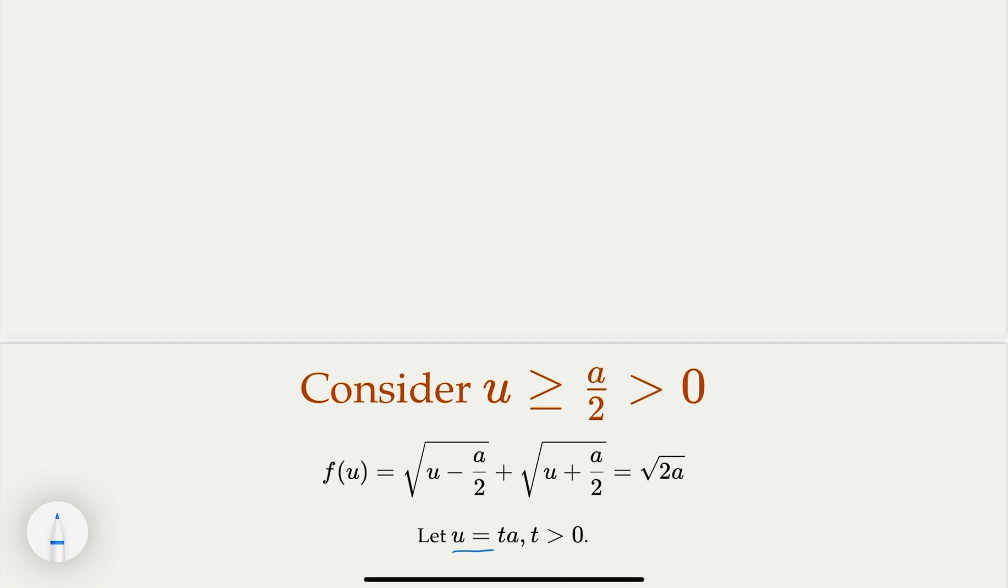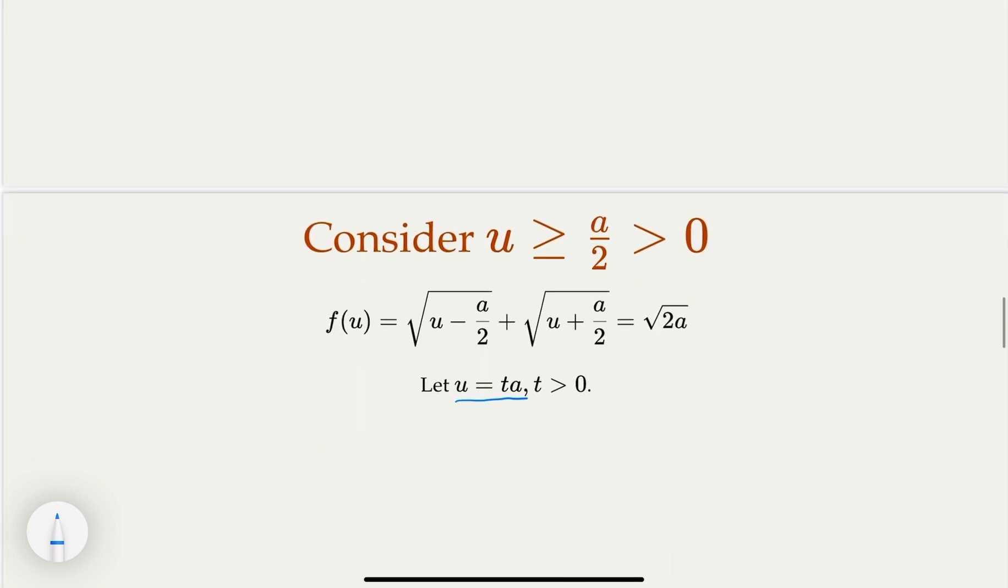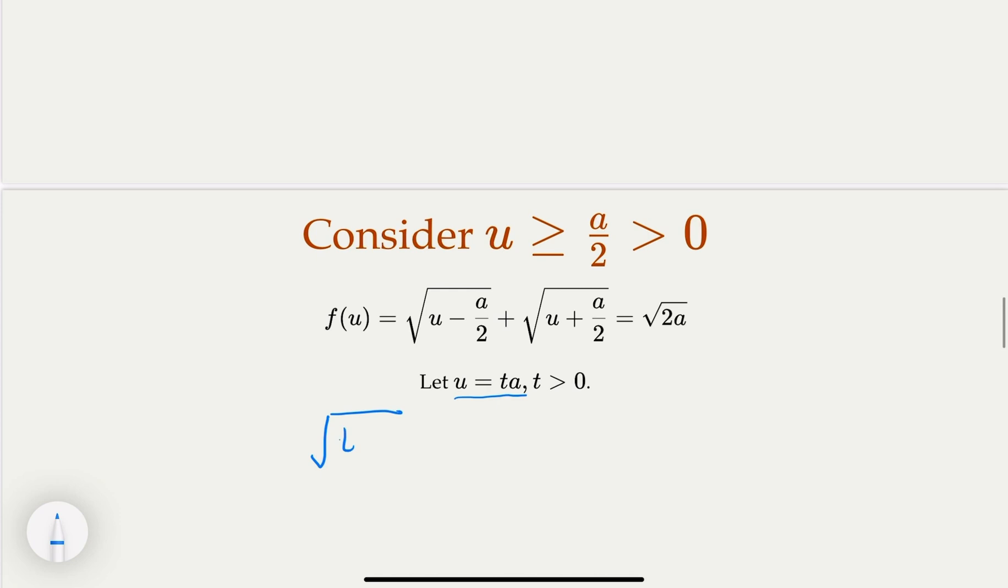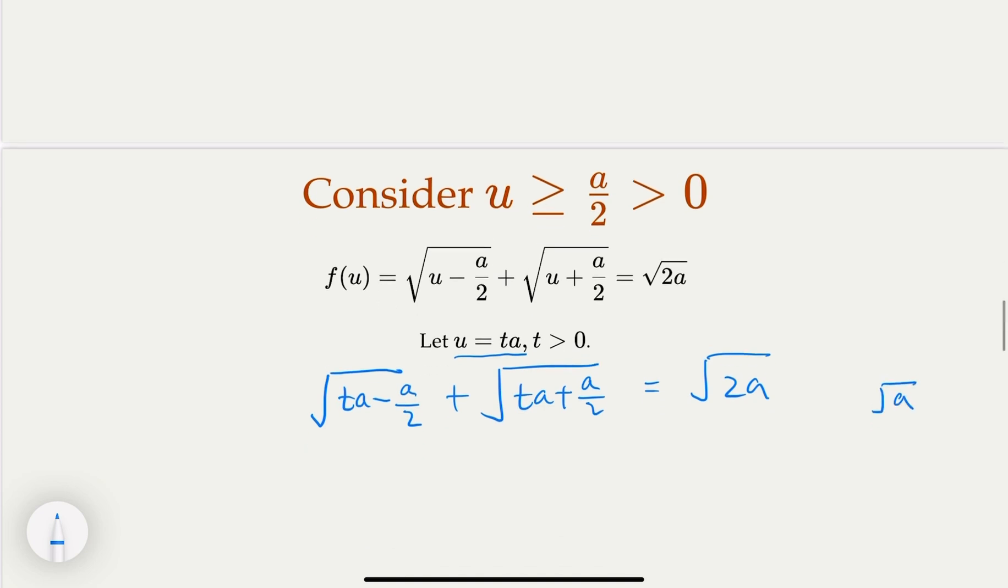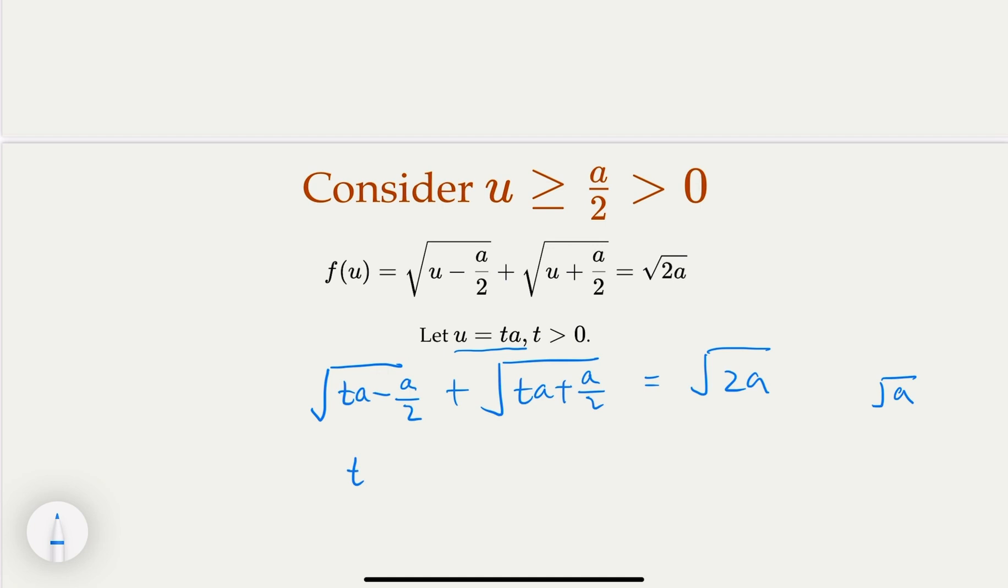Let's plug that in. So what you get is √(ta - a/2) + √(ta + a/2) = √(2a). Of course, you divide both sides by square root of a. So what you get is √(t - 1/2), right, plus √(t + 1/2) and equals √2.